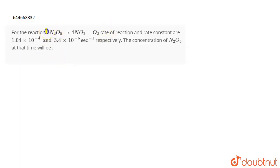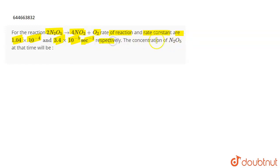The question is: for the reaction 2N2O5 giving 4NO2 plus O2, the rate of the reaction and the rate constant are given. The rate is 1.04 × 10⁻⁴ and the rate constant is 3.4 × 10⁻⁵ second inverse respectively. You have to calculate the concentration of N2O5.